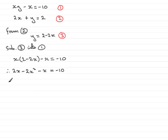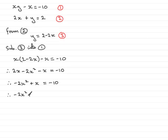Grouping the terms gives minus 2x squared, and combining the x terms — 2x minus x — gives plus x, so minus 2x squared plus x equals minus 10. We have an x squared term, so this is a quadratic equation. Like all quadratics, bring all terms to one side and make it equal to zero. Adding 10 to both sides gives minus 2x squared plus x plus 10 equals 0. Multiplying both sides by minus 1 gives 2x squared minus x minus 10 equals 0.